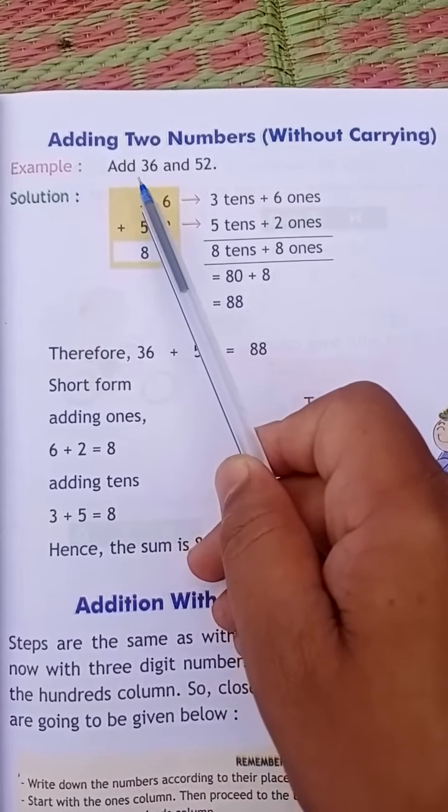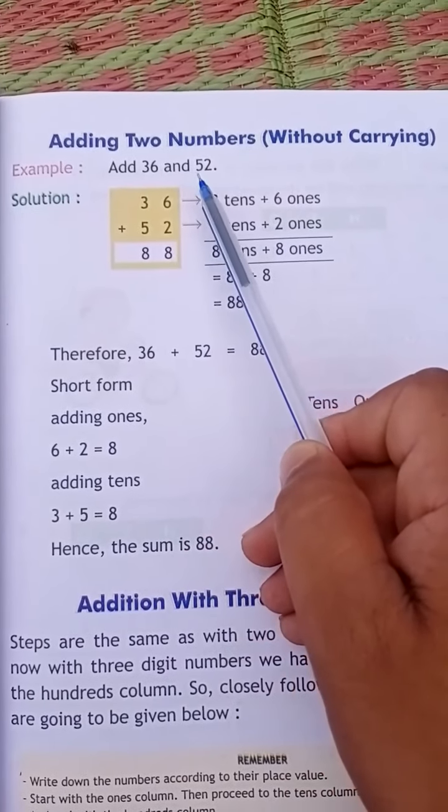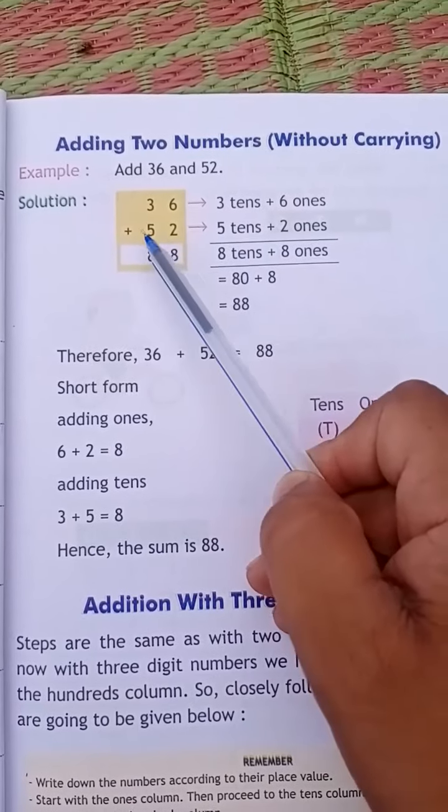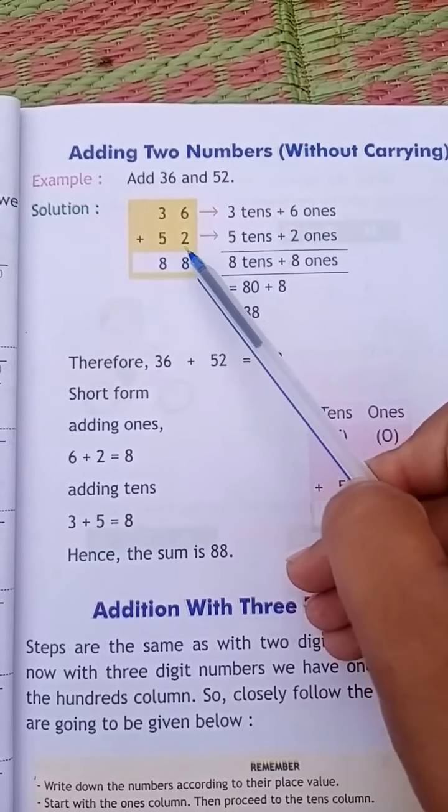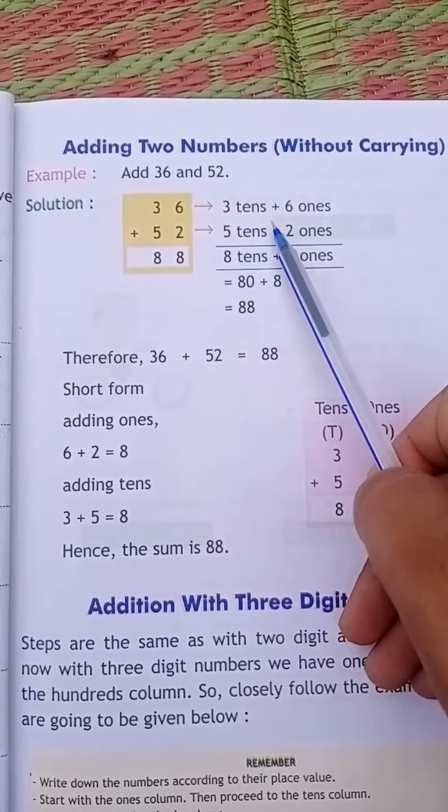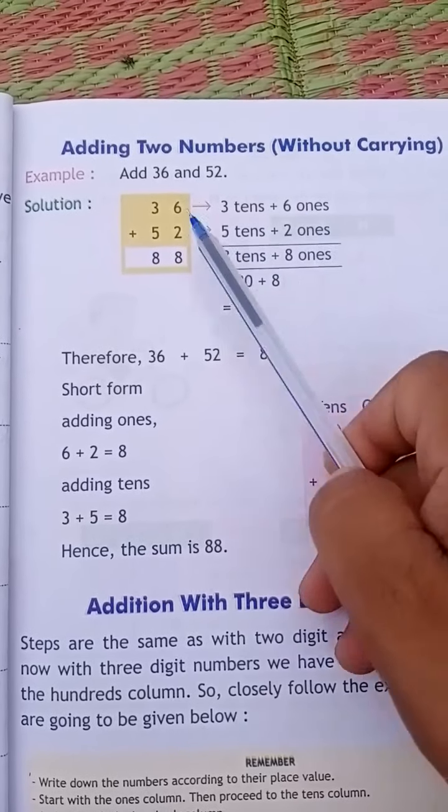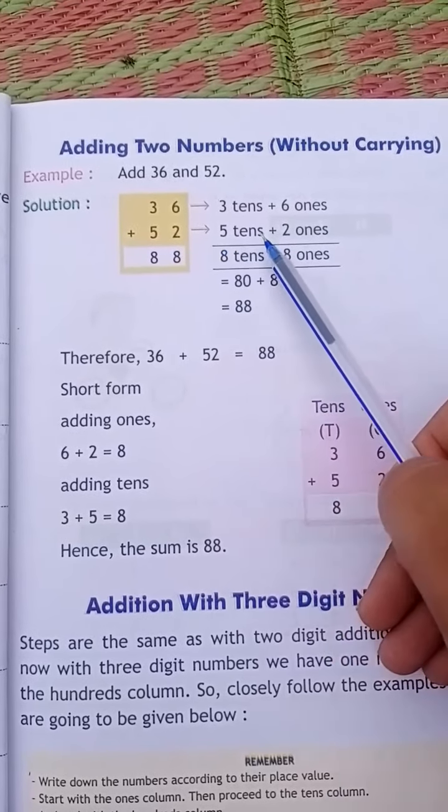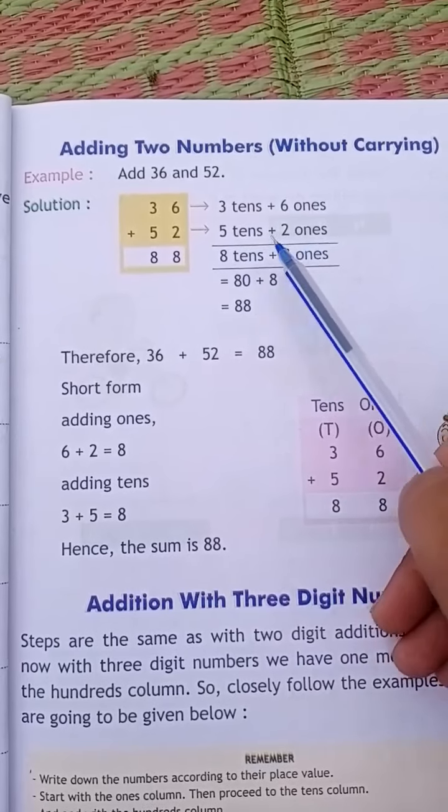Example: add 36 plus 52. Here we will add 36 plus 52. 3 tens plus 6 ones is equal to 36, and 5 tens plus 2 ones is equal to 52.